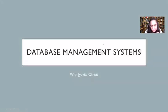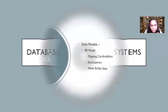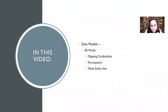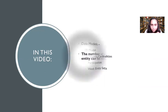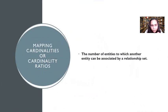Hello and welcome to Database Management Systems. I'm Javita Christie and in this video I'm going to explain ER model mapping cardinalities, participation, and weak entity sets. We'll start with mapping cardinalities, also known as cardinality ratios, which are the number of entities to which another entity can be associated by a relationship set.